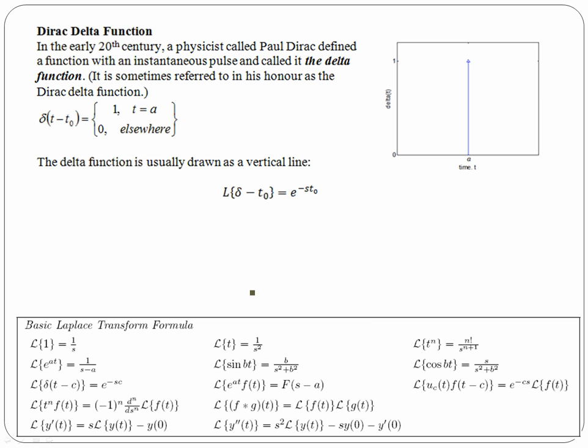The Dirac delta function, or the unit impulse function, is the function that comes along at time t equals zero where the value of the function is zero, and then at some point in time there's an impulse given, and then after that point in time the value of the function is zero.